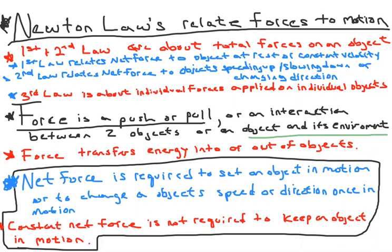Newton's laws relate forces to motion, or motion to forces. If I know something about the forces applied to an object, I can describe and predict its motion. If I know something about an object's motion, I should be able to describe the forces on it. Newton's laws give us that relationship.